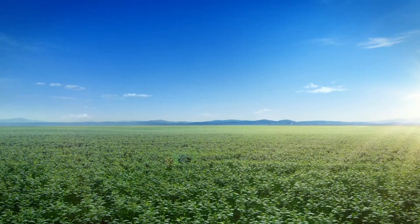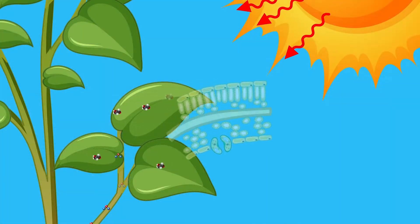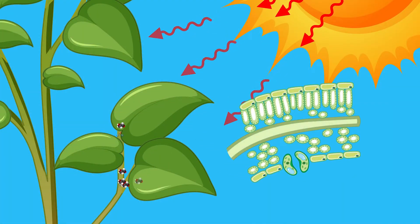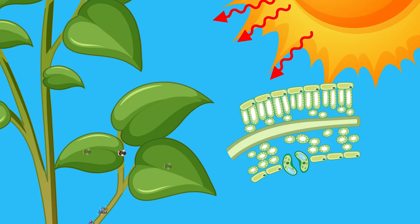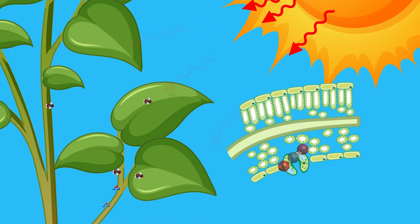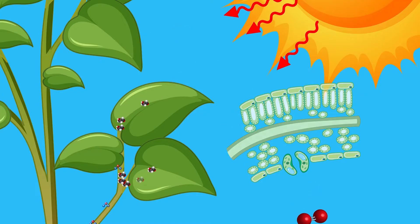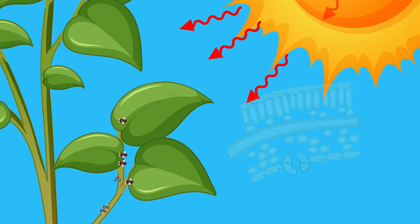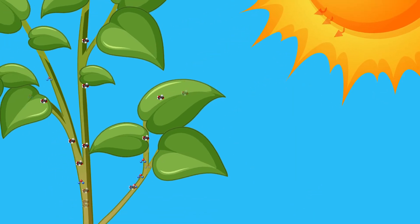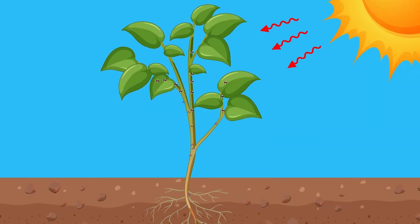Understanding the process of photosynthesis and the true source of a plant's mass is crucial for students to grasp fundamental concepts in biology and ecology, such as the carbon cycle and the role of plants in producing oxygen and sequestering carbon dioxide.